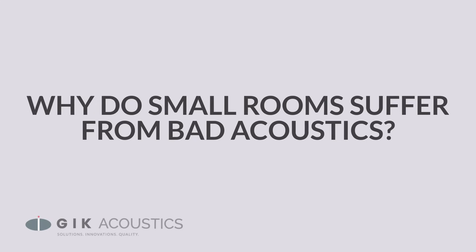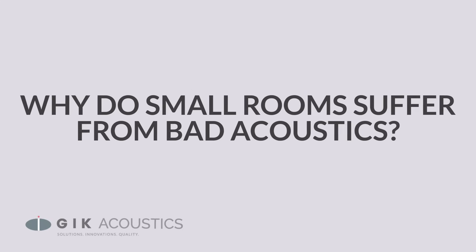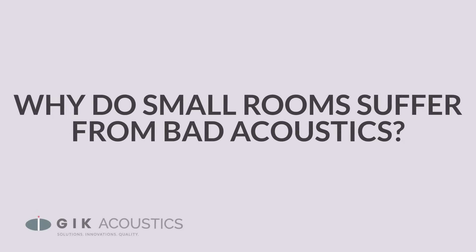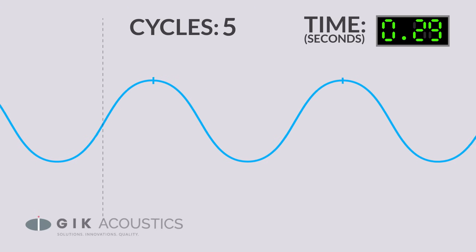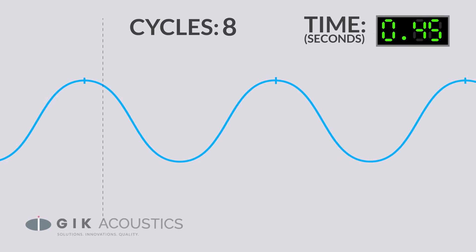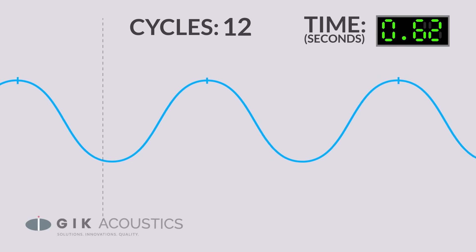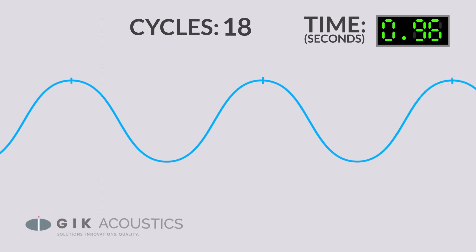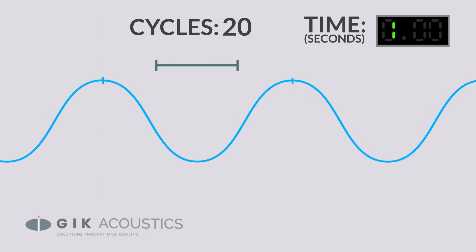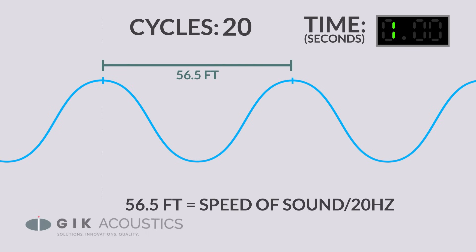Why do small rooms suffer from bad acoustics? We almost always refer to sound waves by their frequency, or the number of full cycles per second the wave completes, but that frequency is always going to correlate to a wavelength, which is just the measurement of the physical length of a completed cycle.